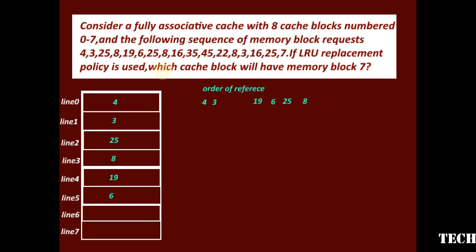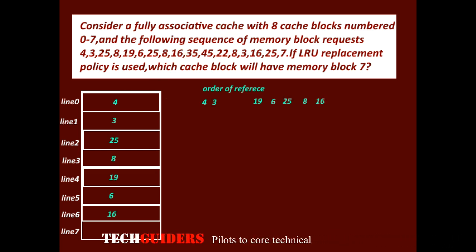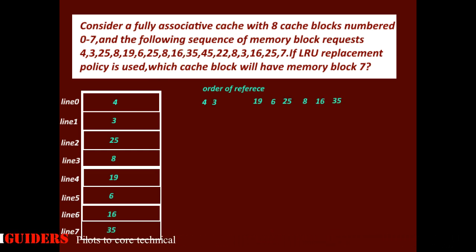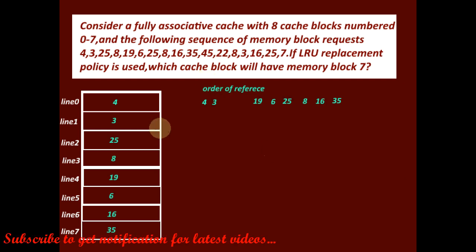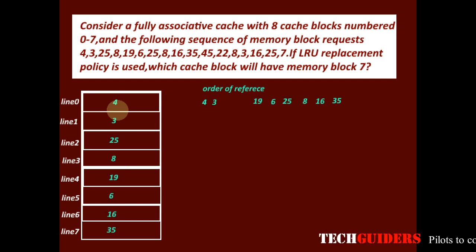Next we have the request for block 16, then block 35, and now block 45. At this point, all the cache lines are full, so we have to replace one memory block in a cache line.